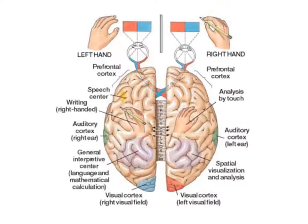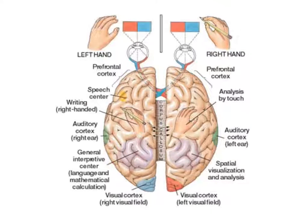For instance, writing for right-handed people takes place in the left hemisphere, whereas analysis by touch takes place in the right hemisphere.